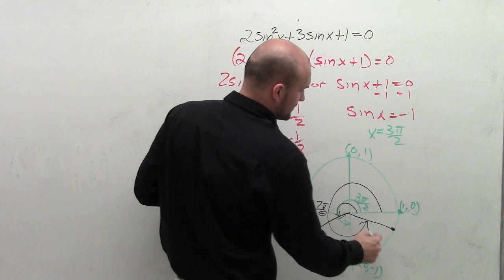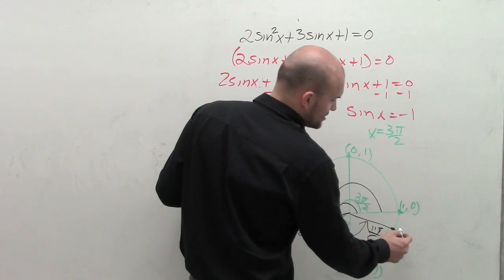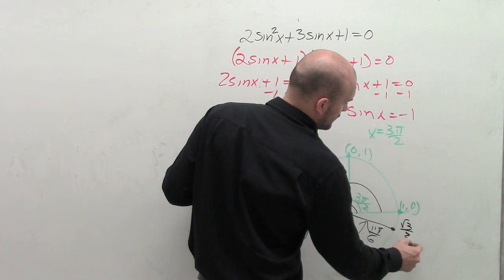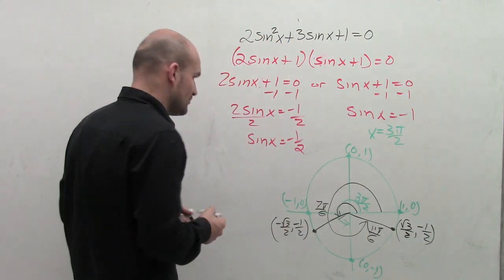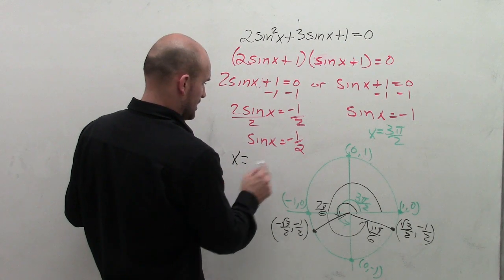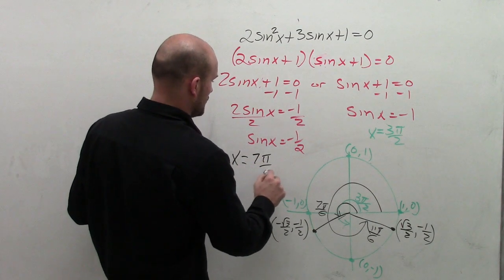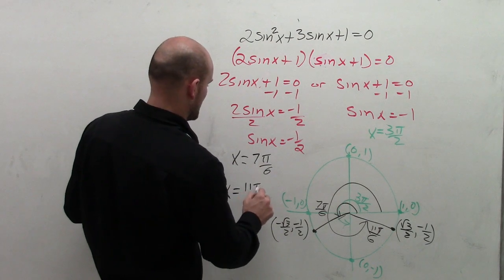And then here, this angle is going to be 11 pi over 6, which has the coordinate of square root of 3 over 2, comma, negative 1 half. So what I'm going to do is write out both of those angles. So I could say x equals 7 pi over 6 and x equals 11 pi over 6.